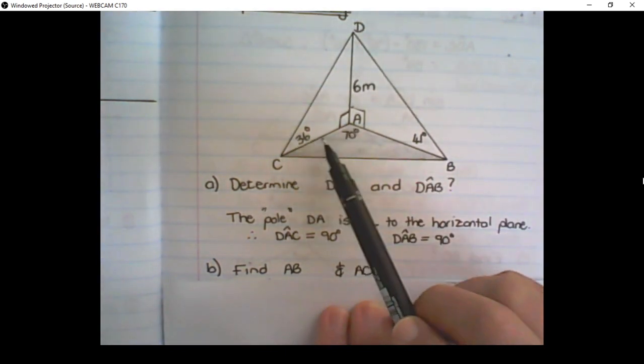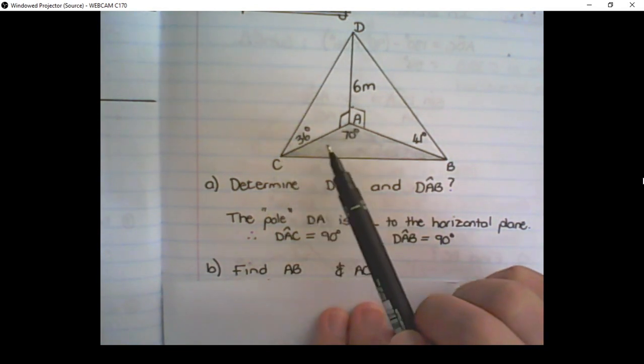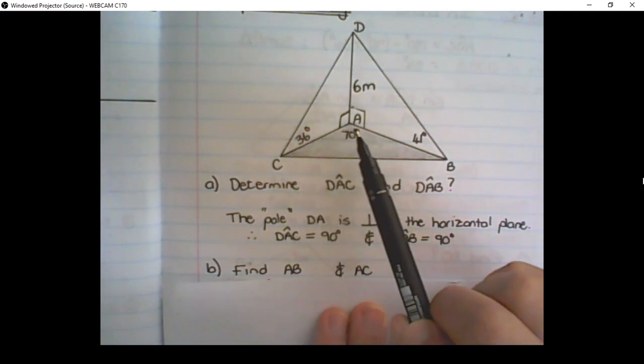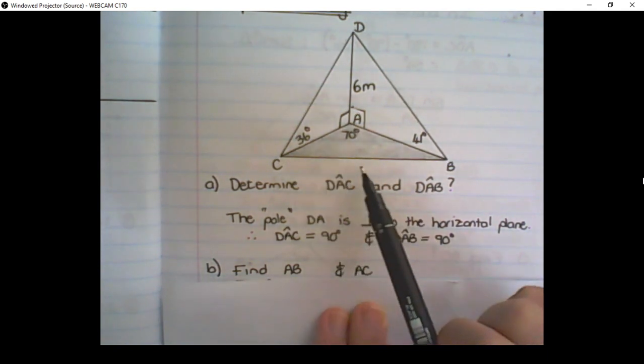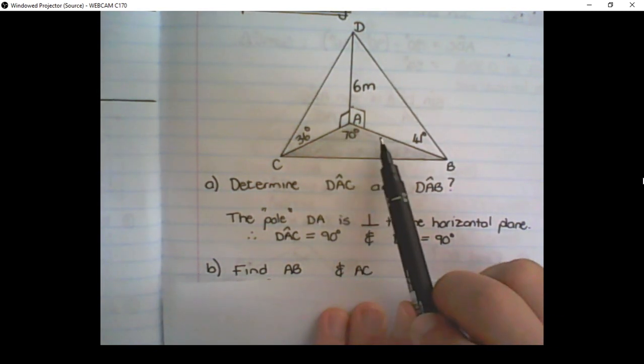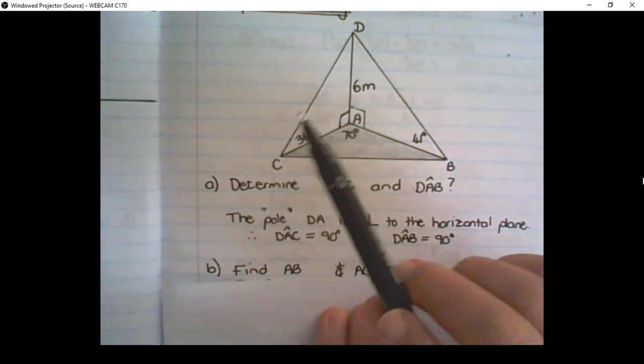These two lines, AB and AC, are only connected by the horizontal plane. But on the horizontal plane, we do not have enough information to apply the sine rule, or reverse the area rule, or apply the cosine rule. So we need to calculate the lines AB and AC separately.